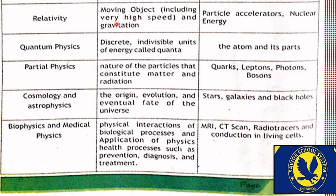اگلی branch ہے relativity — moving objects including very high speed and gravitation۔ مختلف قسم کی moving objects جو بہت high speed پر move کر رہی ہیں، plus زمین کی gravitation — کشش ثقل — ان سب کو detail سے پڑھنا یہ physics کی ایک الگ branch ہے۔ Particle accelerators اور nuclear energy بھی اس میں شامل ہیں۔